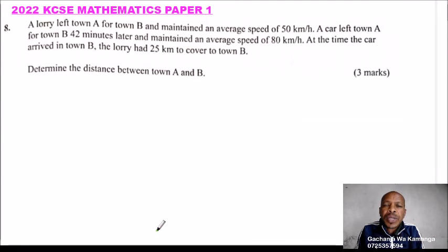This is question number 8, 2022 KCSE Mathematics Paper 1. We are told Arodi left town A for town B and maintained an average speed of 50 km per hour. A car left town A for town B 42 minutes later and maintained an average speed of 80 km per hour. At the time the car arrived in town B, the Arodi had 25 km to cover to town B. Determine the distance between A and B.